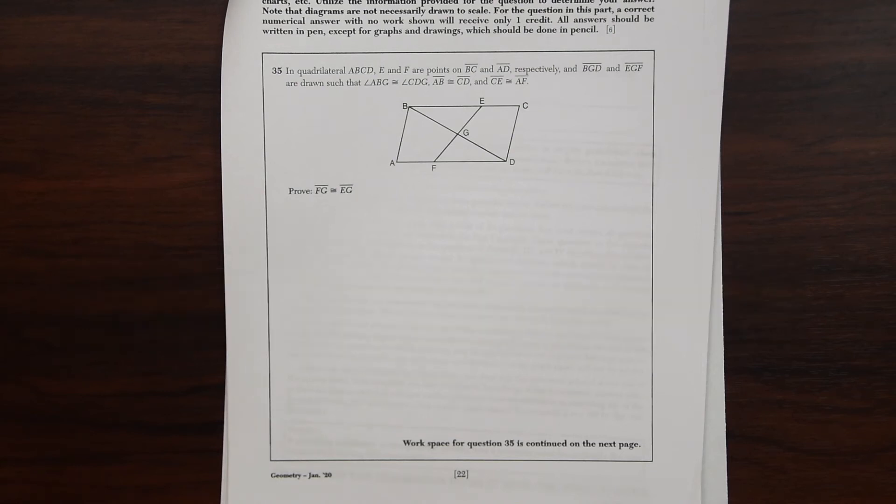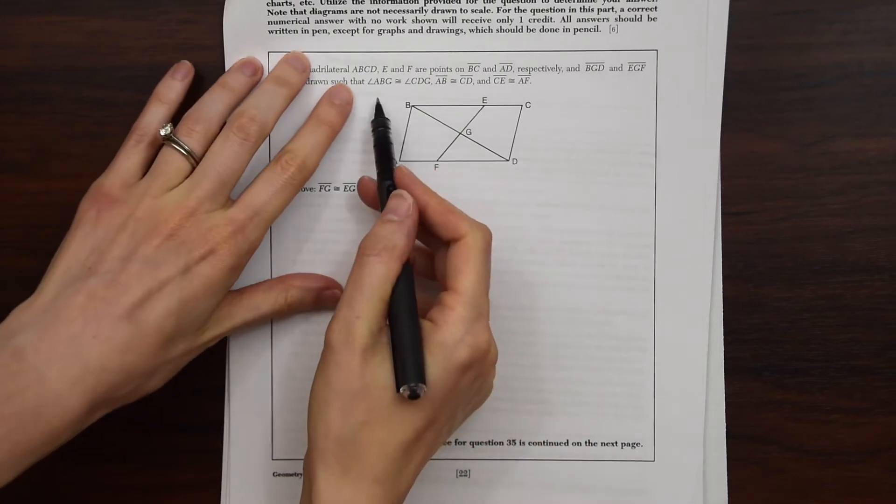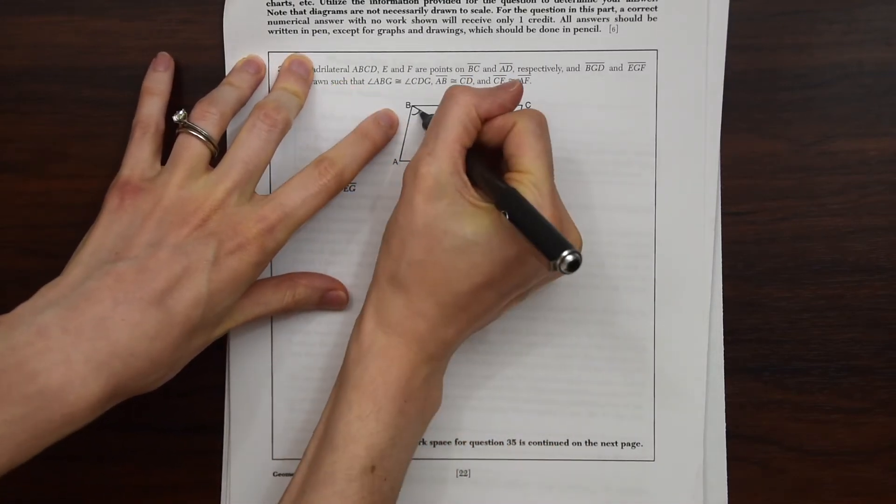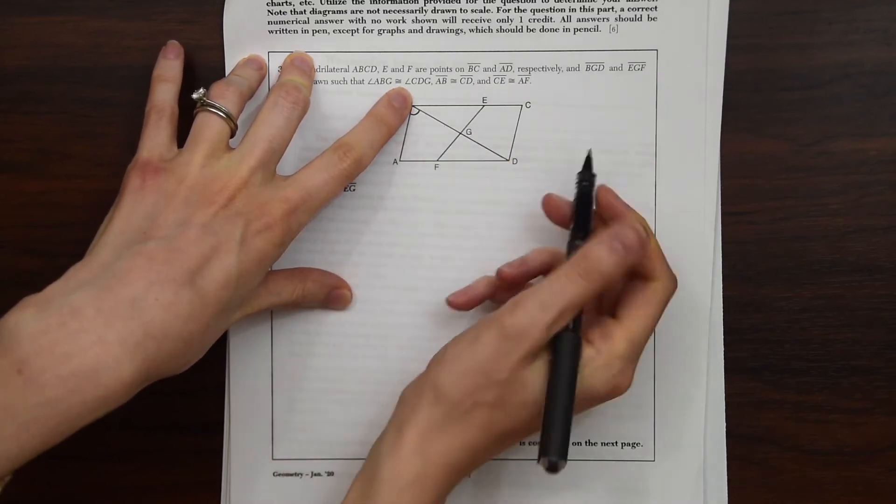So here's our last question. In quadrilateral ABCD, E and F are points on BC and AD respectively.